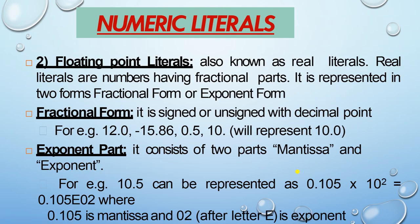The second type of numeric literal is the floating point literal, also known as real literal. Real literals are numbers having a fractional part. It is represented in two forms: fractional form and exponent form. Fractional form is when a number has a decimal point. Exponent form has two parts — mantissa and exponent. For example, 10.5 can be represented as 0.105E02, where 0105 is the mantissa and 02 is the exponent; E represents the exponent.